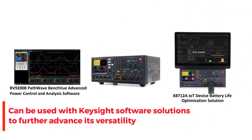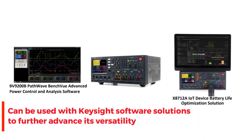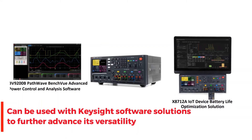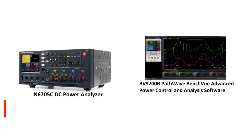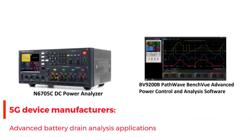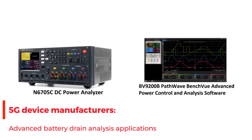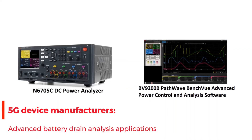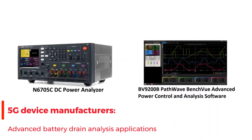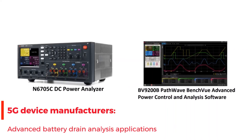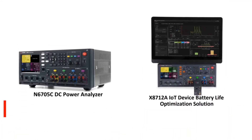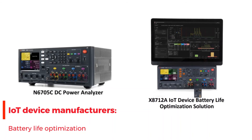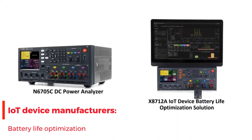This DC Power Analyzer can be used with many Keysight data analysis software solutions to further advance its versatility. For example, it can be used with Keysight BV900B Advanced Power Control and Analysis Software. This setup is used by 5G device manufacturers for advanced battery drain analysis applications, and it is also a key component of the X8712A battery life optimization solution.